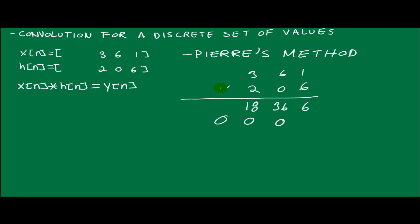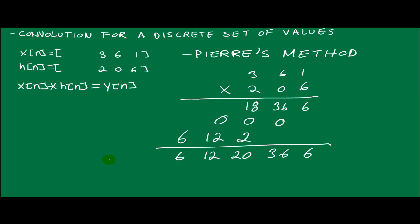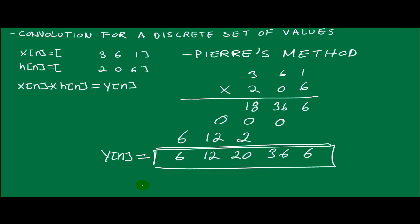And now for the two: two, twelve, and six. Then you just add the numbers — six, thirty-six, six, twenty, twelve, and six. This is your y[n], so you write it like this: six, twelve, twenty, thirty-six, and six.